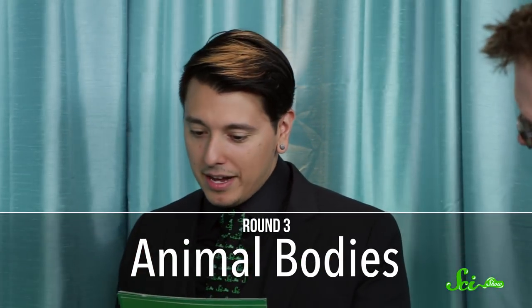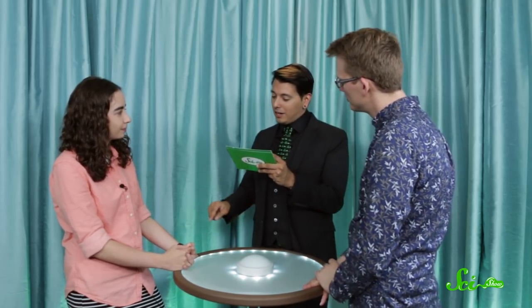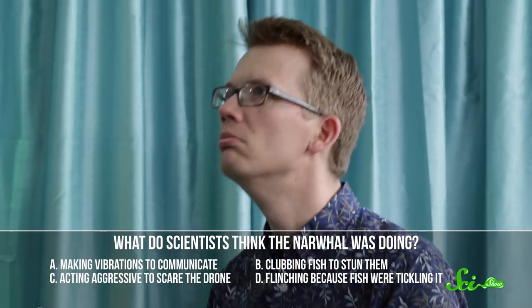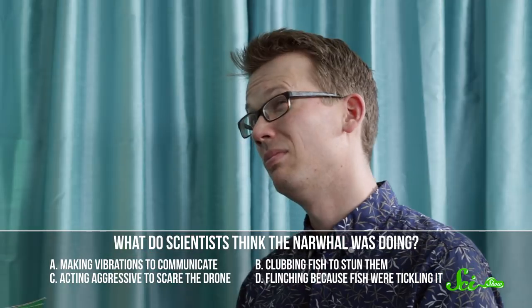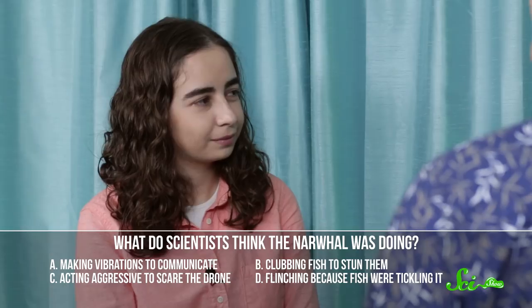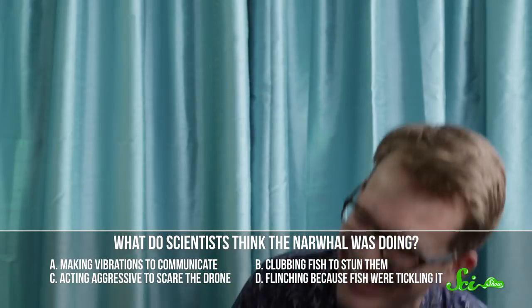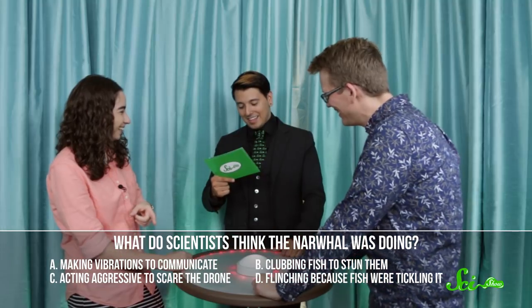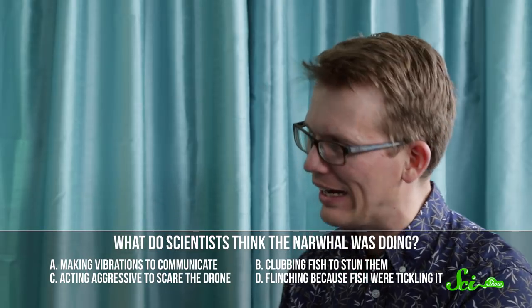Okay, the next question is all about animal bodies. Sometimes they work real differently than ours do. For instance, male narwhals have a huge tooth sticking out of their heads, making them basically aquatic unicorns. And biologists have had a lot of different hypotheses about what they use these tusks for, like detecting subtle changes in the water with super-sensitive nerve endings or chipping away at the ice. But in May this year, a swimming narwhal was caught on drone video, making jagged up-and-down movements with its tusk, a behavior that had never been seen before. What do scientists think it was doing? Making vibrations to talk to other narwhals, clubbing fish to stun them, acting aggressive to scare the drone away, or flinching because fish were tickling it? Got that fish tickle. That's my guess, is the fish tickle. You're going fish tickle? Yeah. I'm sorry, that is incorrect. I'm gonna go with fish stunning. That is correct!